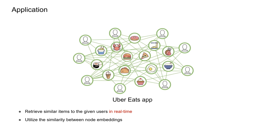There are some applications using GNNs, like the Uber Eats app, a food ordering app which retrieves similar items to the given users in real-time utilizing node embeddings. Notice that here we need real-time node embeddings, meaning this kind of graph can also be dynamic.